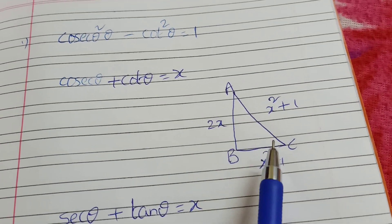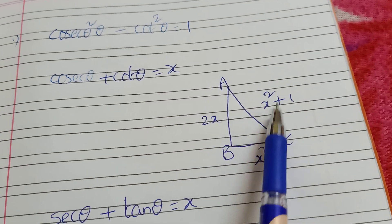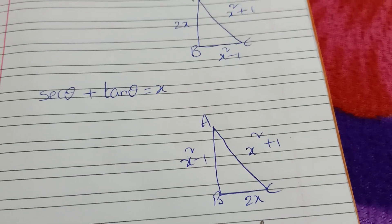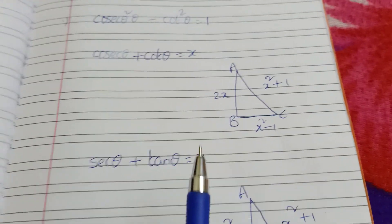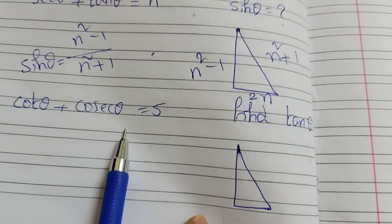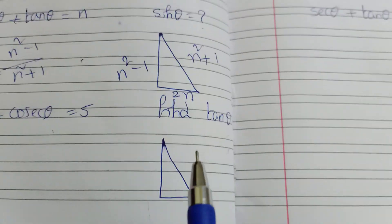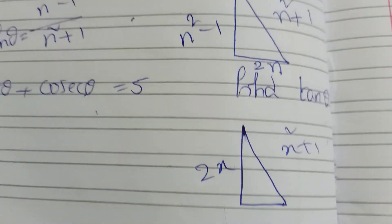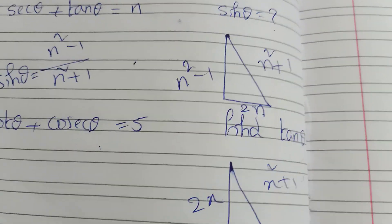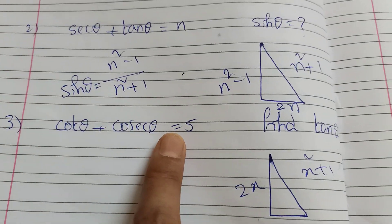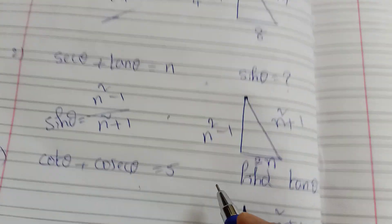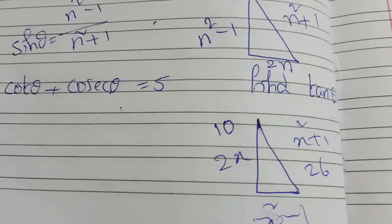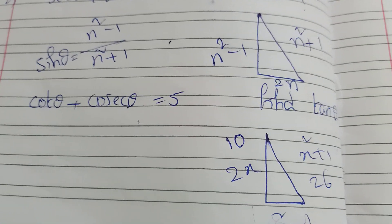Sin θ is equal to (x² minus 1) divided by (x² plus 1). The opposite side is 2x and x² + 1 is hypotenuse, x² minus 1 is adjacent. If we use n = 5: 2n = 10, n² + 1 = 26, and n² minus 1 = 24.